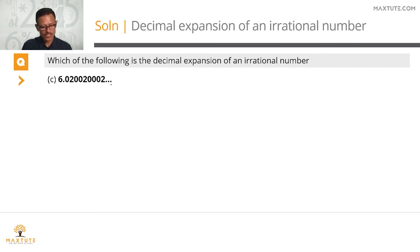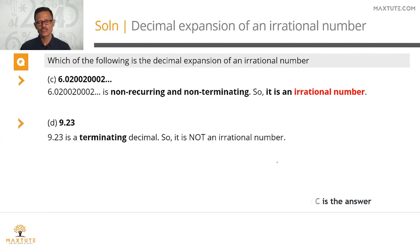The third one is non-terminating and also non-recurring. So this is the irrational number in the group. The next one is a terminating decimal. Therefore, it is not irrational. Choice C is the answer to this question.